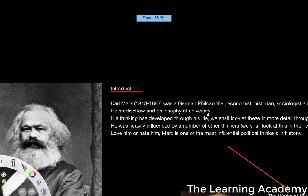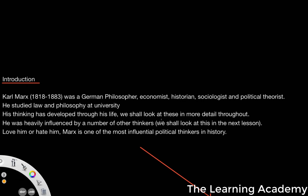Karl Marx was a German philosopher, economist, historian, sociologist, and political theorist — he was basically everything. He studied philosophy and law at university and his thinking developed through his life, so we'll look at these in more detail throughout.